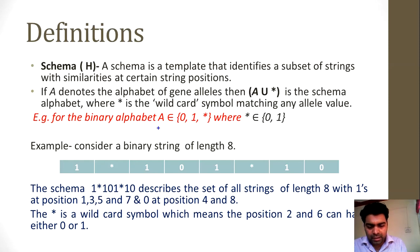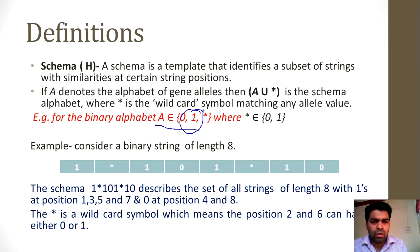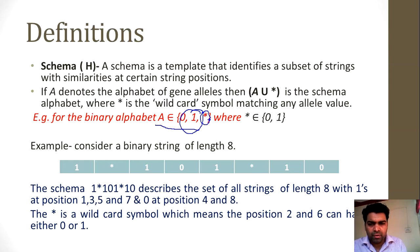Let's talk about binary alphabets A. Binary alphabets means it can store only two values: 0 and 1. The wild card symbol asterisk means it can take either value — 0 or 1. To understand this concept, let's think about a binary string of length 8.